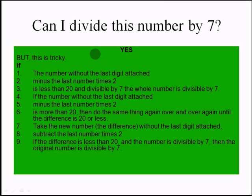We can say the number is divisible by 7 if: take the number without the last digit, minus the last digit times 2. If that result is less than 20 and divisible by 7, the whole number is divisible by 7. This is only for experts — if it is confusing, please let the video go. You don't have to know this.